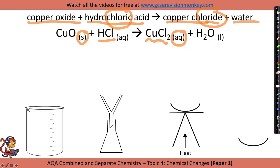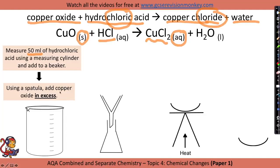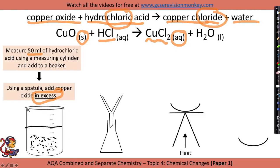The first thing you do for this practical is measure a fixed volume of hydrochloric acid — for example, 50 mils — using a measuring cylinder and add this to a beaker. To that beaker, using a spatula, you would add copper oxide in excess, which means you keep on adding the copper oxide until no more will react. You will notice when you have excess because there will be unreacted copper oxide visible in the solution, so we need to get rid of that.